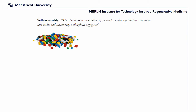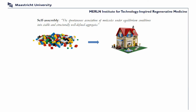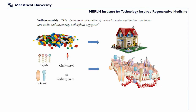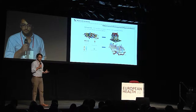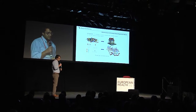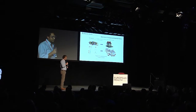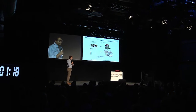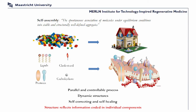We build molecules that have a certain shape and a certain function, so we can combine these in a unique way into a functional architecture. Humans, I like to say, are creative — but we're actually not. The human body is quite capable of this itself. The cell membrane is a beautiful example of self-assembly. This is a parallel and controllable process that gives you dynamic structures; it's self-correcting and self-healing, and the structure reflects the information coded in the individual components.